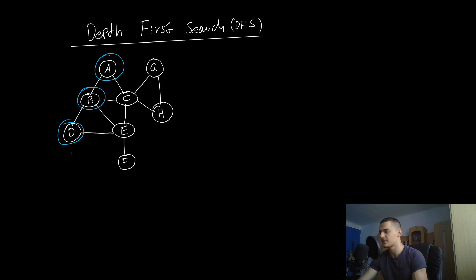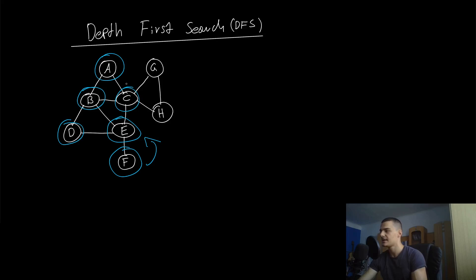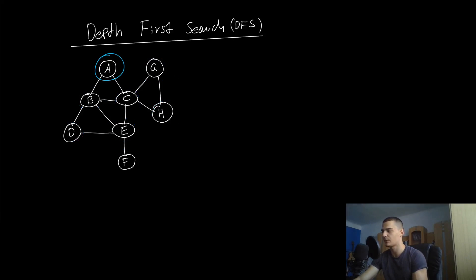So we go A, B, D — picking D over E — then from D we go to E. From E we can either go back to a neighbor of A or deeper, so we go to F. Now with no options left we recursively backtrack — like returning from a recursion — back to E, then we can access C, then from C pick G, then H. We recursively go back through the path until we reach the starting point A. That is the Depth First Search.